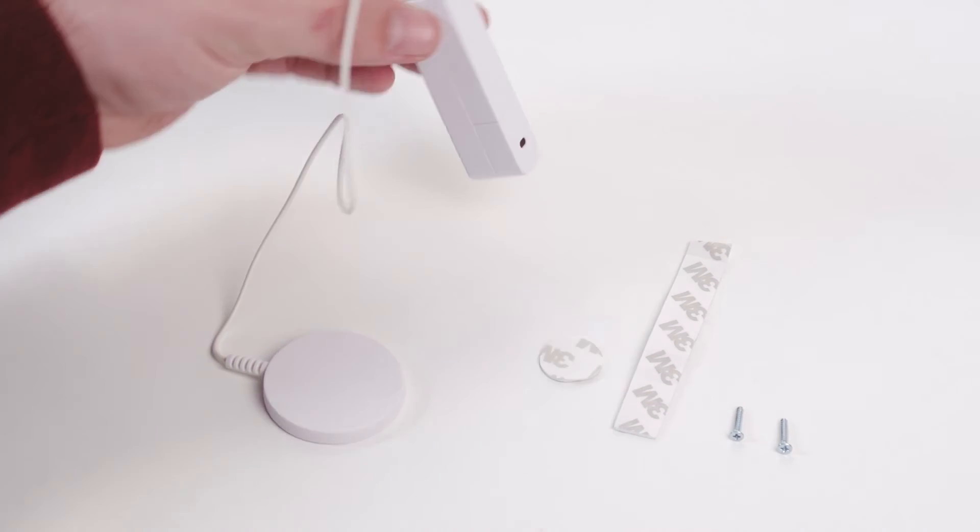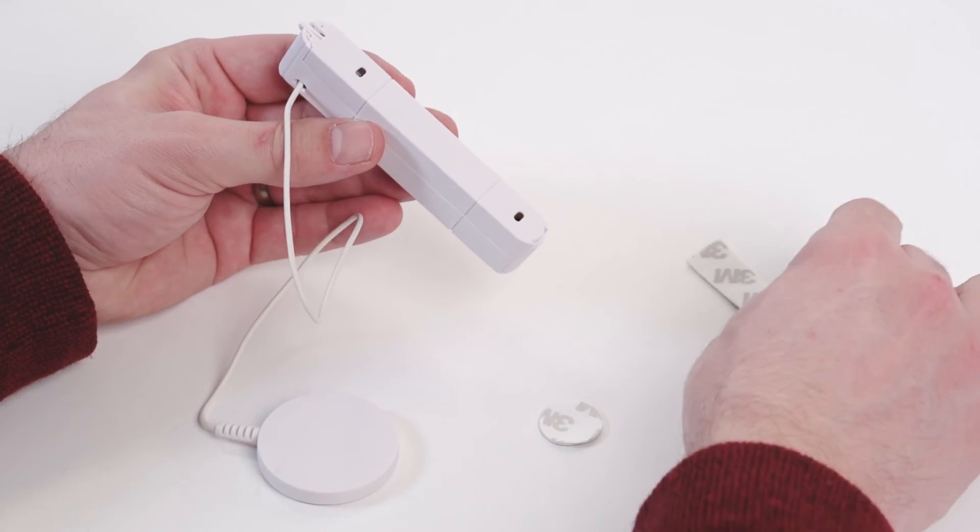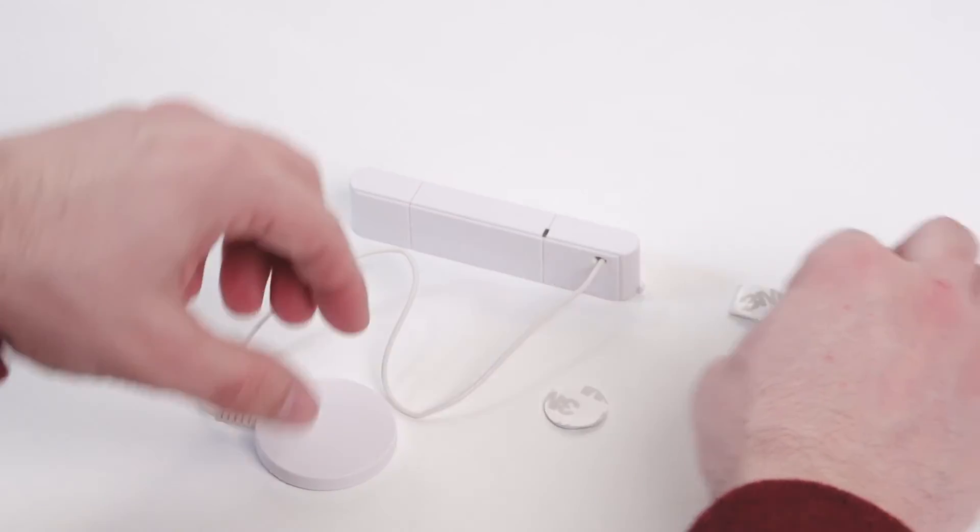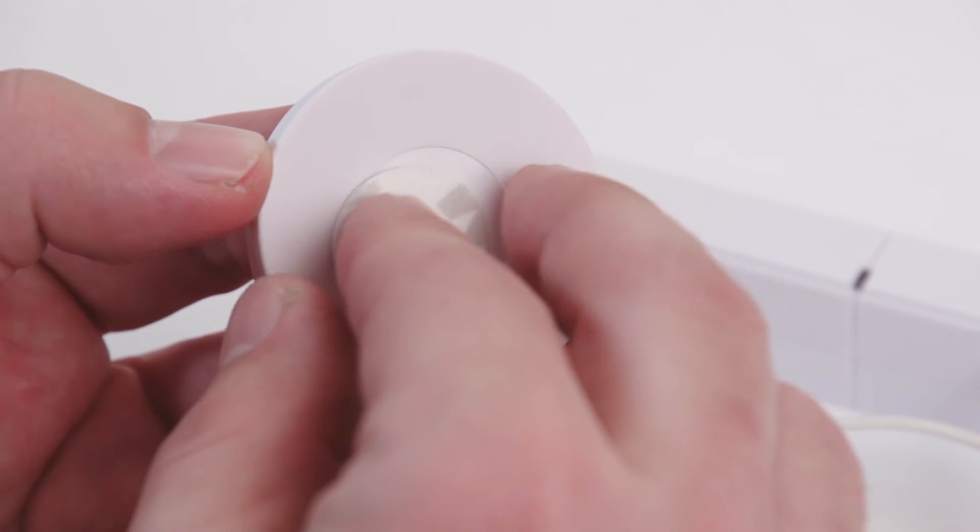Adhere the glass breakage detector to the object to be monitored. Please use the provided screws or the adhesive tape. Make sure the tape is placed on the round spot.